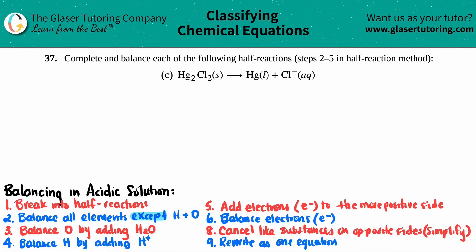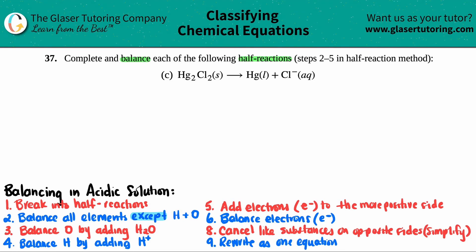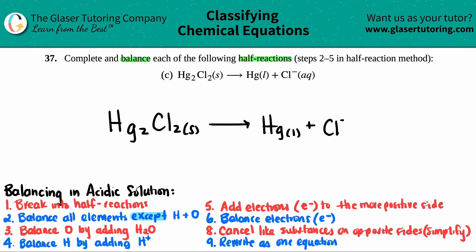Number 37: complete and balance the following half-reactions, which is steps 2 to 5 in the half-reaction method. We have Hg2Cl2 solid yielding Hg liquid plus Cl minus aqueous. I'm going to write this nice and big so we have more space to play with.